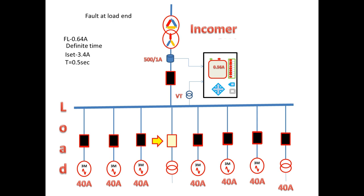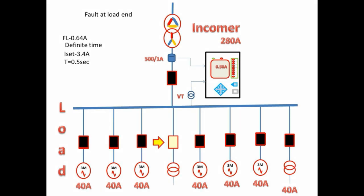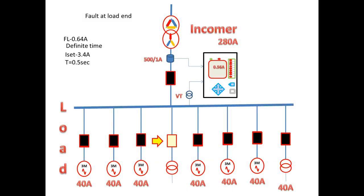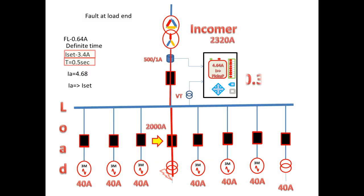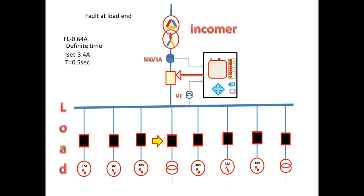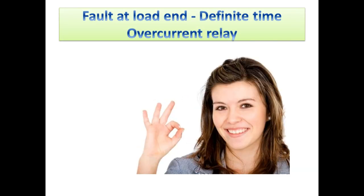Within this time, if the outgoing feeder trips, the incoming current will get reduced and it will remain in service. So all other loads will get power supply. In the other case, if the outgoing feeder fails to trip, the incomer will take the chance and trip the breaker. The fault isolation time is only 0.5 seconds — a lesser time for isolating a fault at load end. So for this type of fault we can choose definite time.